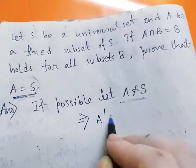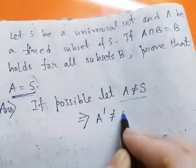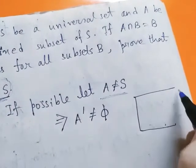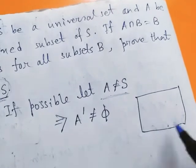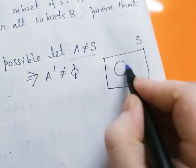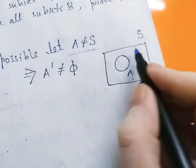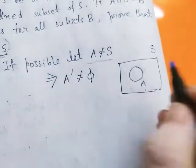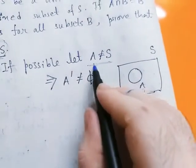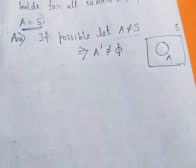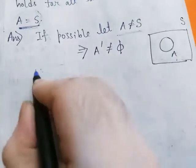Suppose this is universal set S, this is A, and this is A complement. Now A not equal to S, so obviously A complement is non-empty.